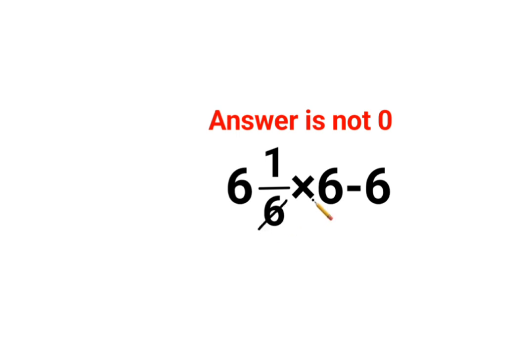Because see, this 6 and this 6 can get cancelled. So 6 multiplied by 1 is just 6 minus 6. The answer should be 0.